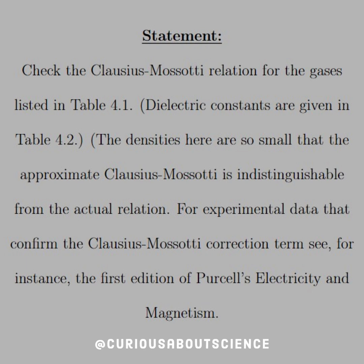We'll just call it the CM relation for now. We want to check the CM relation for gases listed in table 4.1 at the beginning of the chapter. The dielectric constants are given in table 4.2, so we can set up an equation to approximate this pretty quickly and then verify with table 4.2.